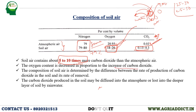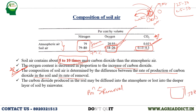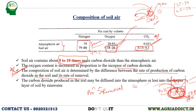This is very important: the composition of soil air is determined by the difference between the rate of production of CO2 in the soil and the rate of its removal. If the rate of production is more than removal, CO2 content will increase in the soil. Likewise, if the rate of production is less than removal, CO2 content will decrease in the soil.